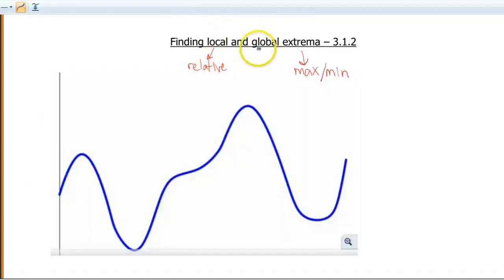And then global, that just means like overall. So a word you might have heard from algebra before is absolute maximums or minimums. So just know all these words mean the same thing and be able to distinguish between them.